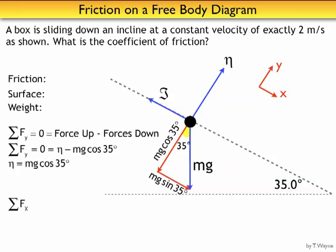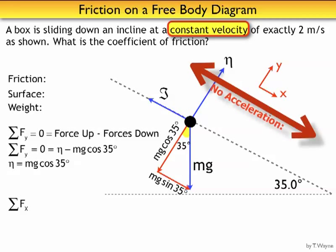Next, summing up the forces in the x direction. In the x direction, in this problem, it says it's moving at a constant velocity along the incline. So in the x direction, there's also no acceleration. No acceleration means no mass times acceleration, so that's equal to zero.